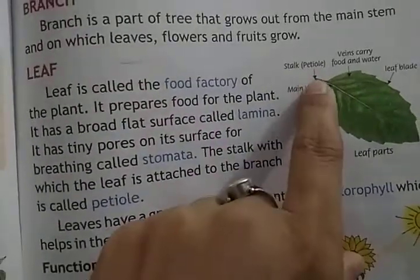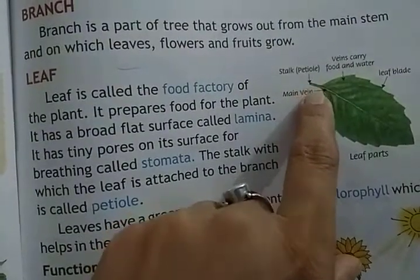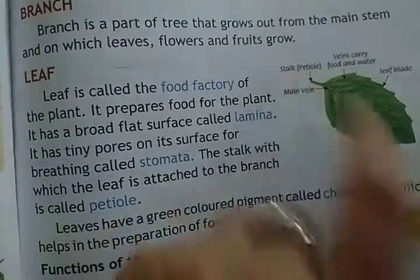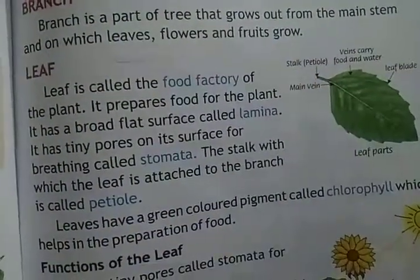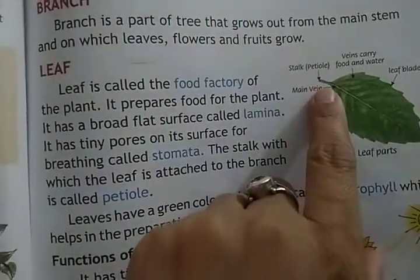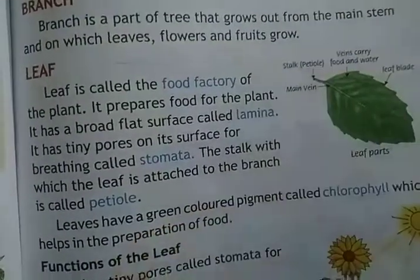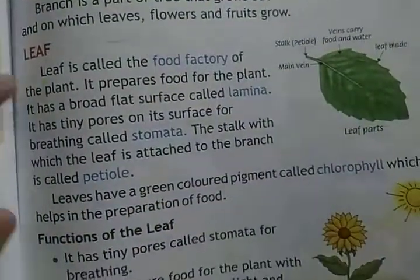The small stalk of the leaf which is attached to the branch — we call it the petiole.